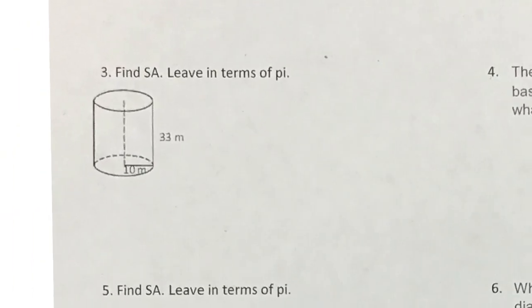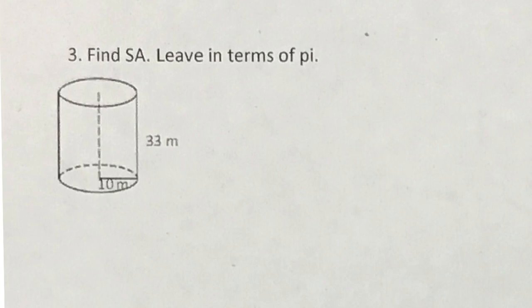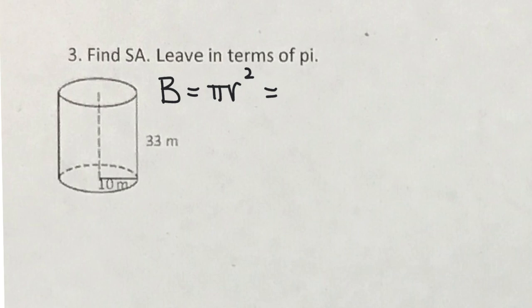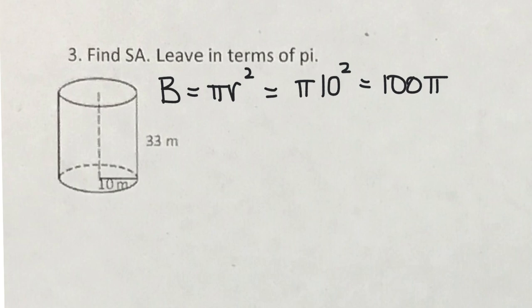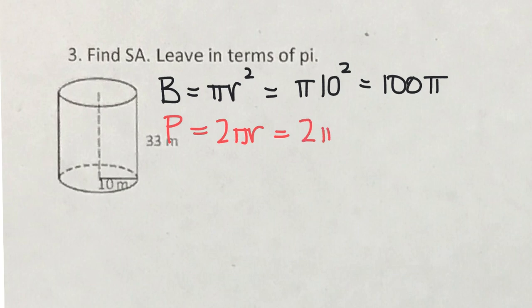This is a cylinder example — a pretty basic formula application. We do two calculations: find the area of your base, which is a circle, using pi r squared. That gives a base area of 100 pi square meters. We also need the base perimeter, which for a circle is the circumference, using the formula 2 pi r.